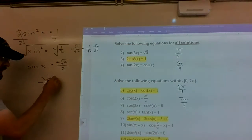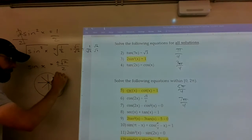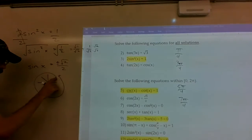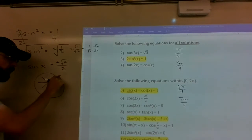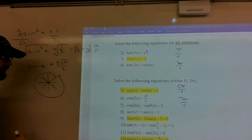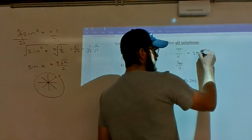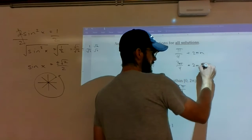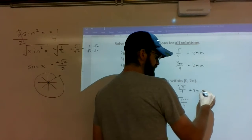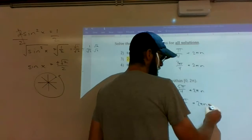Now when it says all solutions, it means that π/4 works, and so does π/4 plus 2π. So if I add 2π into all of these, I get all the solutions possible.